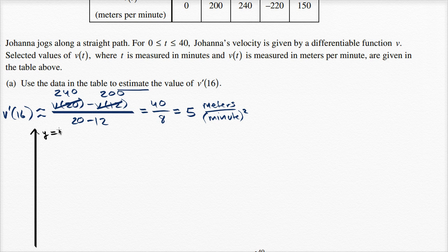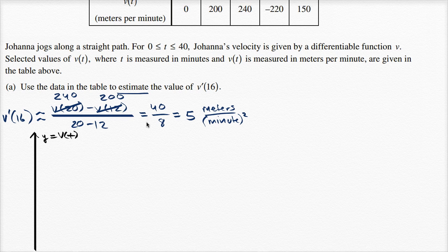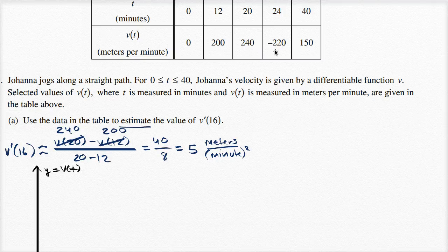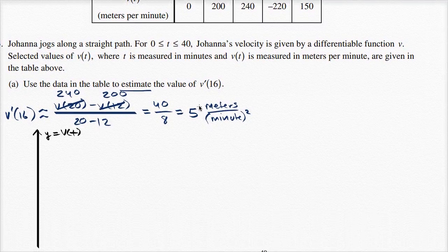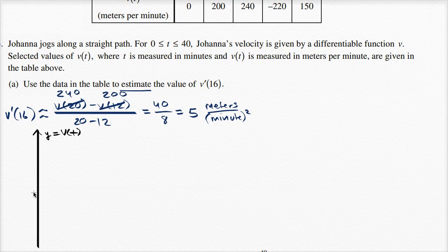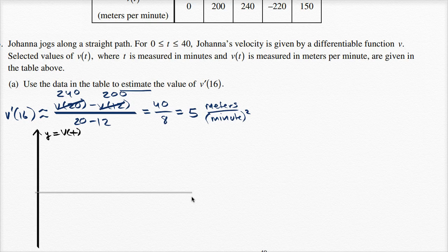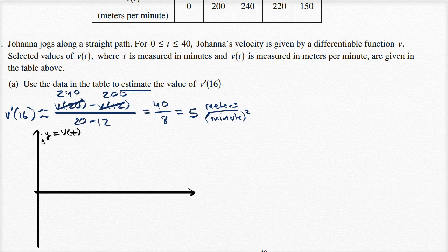So let's say this is y is equal to v of t, and we see that v of t goes as low as negative 220, goes as high as 240. So I want to draw the horizontal axis someplace around here. t is positive, it looks something like that.